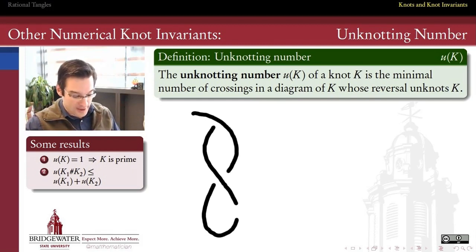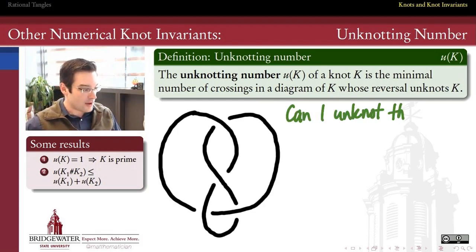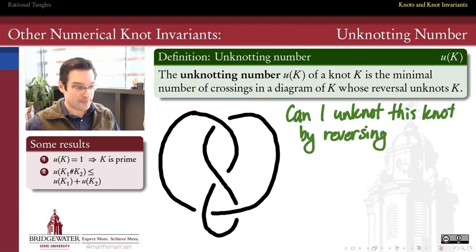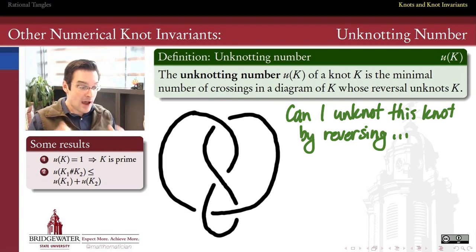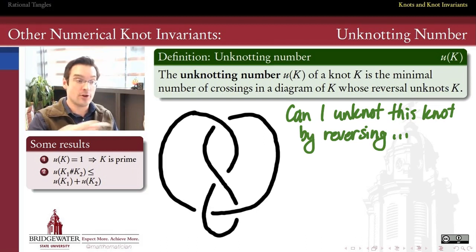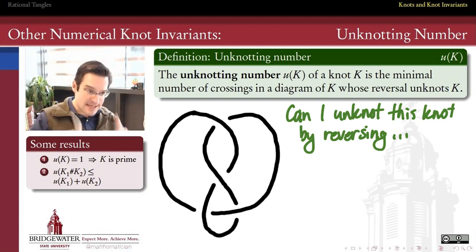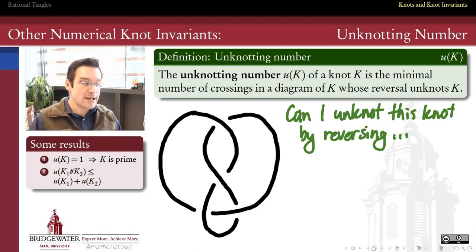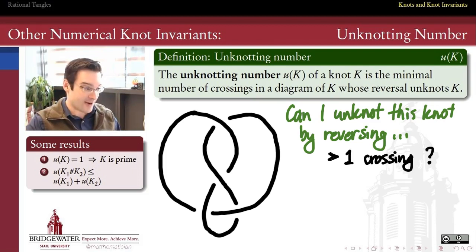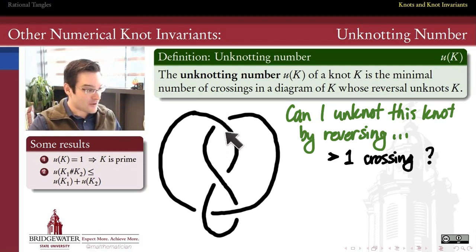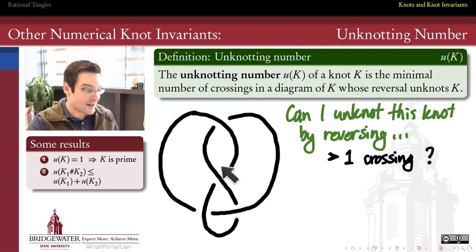Let's take a look at an example. Here is the figure eight knot, four sub one. The question of finding the unknotting number of this knot is: how many crossings do I need to reverse — from over to under or vice versa — in order to unknot this knot? Can I do it, like 'name that tune,' by reversing just one crossing? I'll look through the knot and say: what if I reverse this one? Would that make an unknot? No. What if I reverse this one? No.